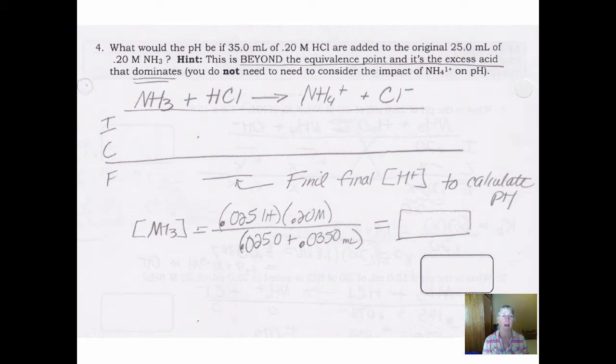We're almost done. At question 4, which is on the back side of this worksheet, we now have a situation where we go beyond the equivalence point. Remember the addition of 25 milliliters brought us to the equivalence point? Well, if I slam in 35 milliliters of 0.2 molar HCl, now I've gone beyond. The HCl is dominating, and it's not in equilibrium anymore, and there's so much excess HCl in there, you don't even have to worry about the tiny impact that the ammonium ion might have on pH. So essentially what you need to find in your challenge on this problem, which as you can see is much more skeletal, is to find the final concentration of hydrogen ion so that you can find what the problem wants, pH. I do need to notice that 35 milliliters of 0.2 molar HCl is being added to 25 milliliters of the original 0.2 molar NH3.